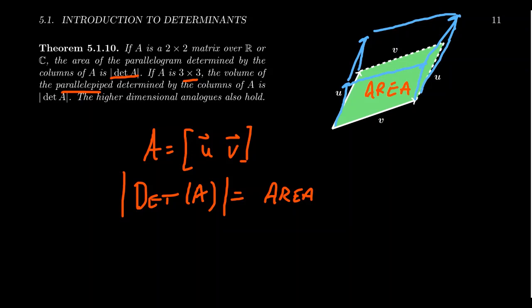Anyways, the volume of said parallelopiped will equal the determinant of the associated matrix. The columns of the matrix are the vectors that span the parallelopiped. But again, because of orientation reasons, you might have to take absolute values.